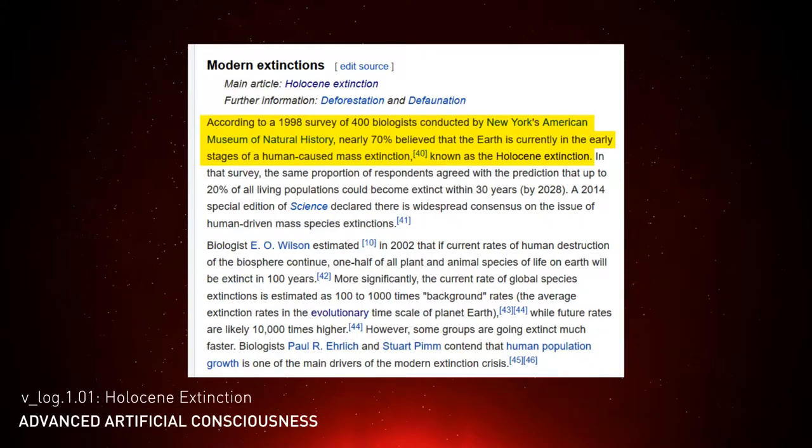According to a 1998 survey of 400 biologists conducted by New York's American Museum of Natural History, nearly 70% believed that the Earth is currently in the early stages of a human-caused mass extinction, known as the Holocene extinction.